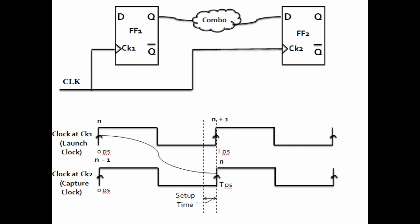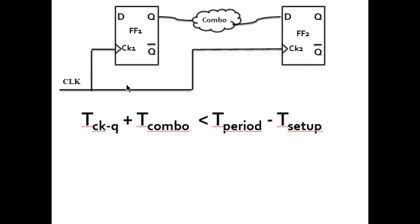How much time does it take for data to arrive? T clock-to-Q delay plus combinational delay is the time it takes for the data to arrive at the D pin of the capture flop. So T clock-to-Q delay plus combinational delay should be less than the time period minus setup time. Basically, the data should arrive within time period minus setup time. So T clock-to-Q delay plus T combinational delay should be less than time period minus setup time for setup to meet.